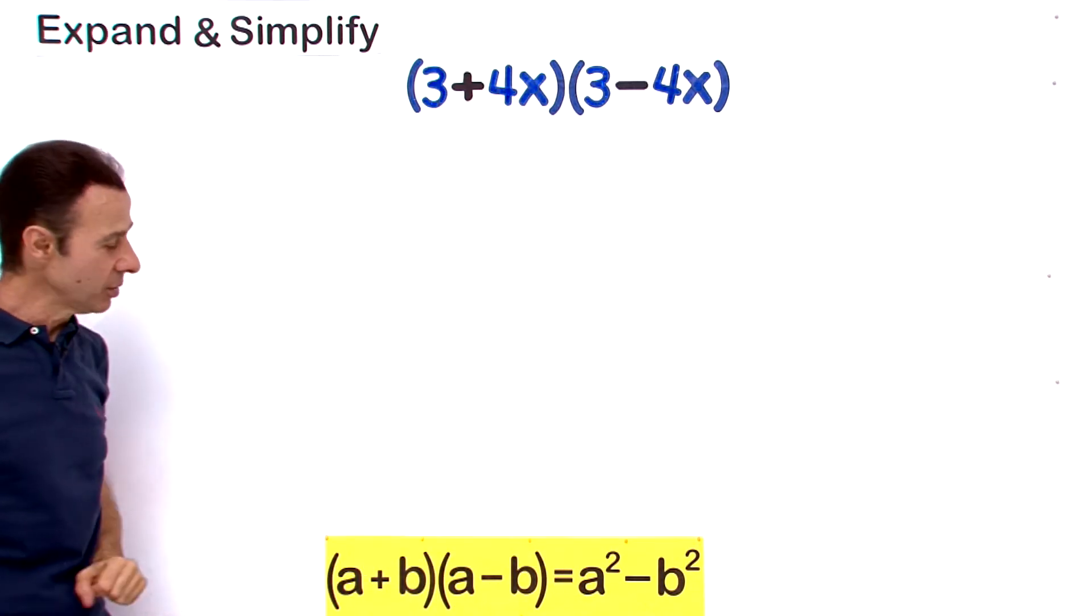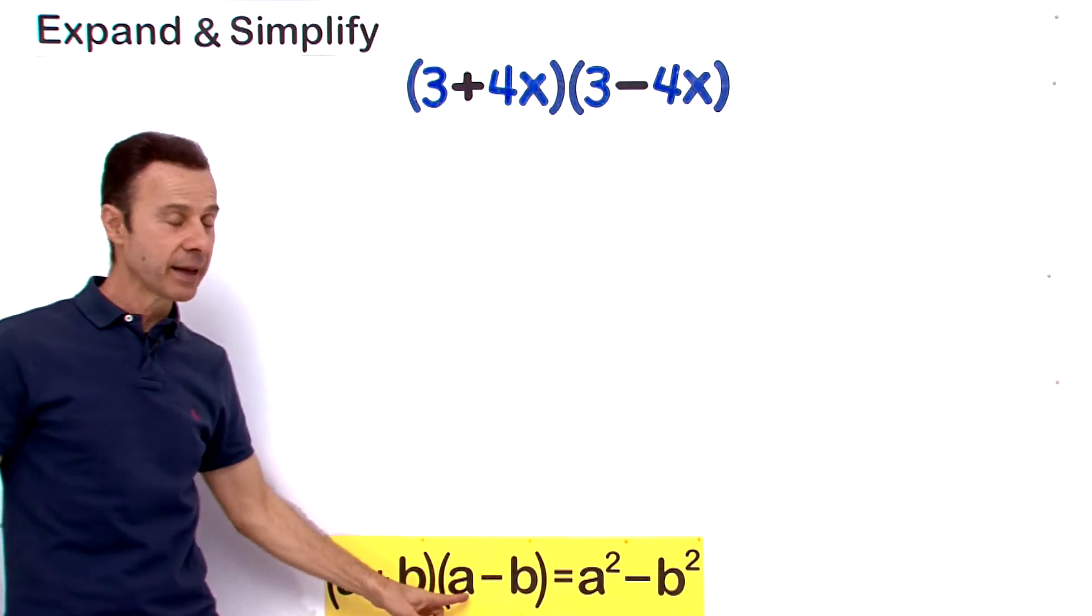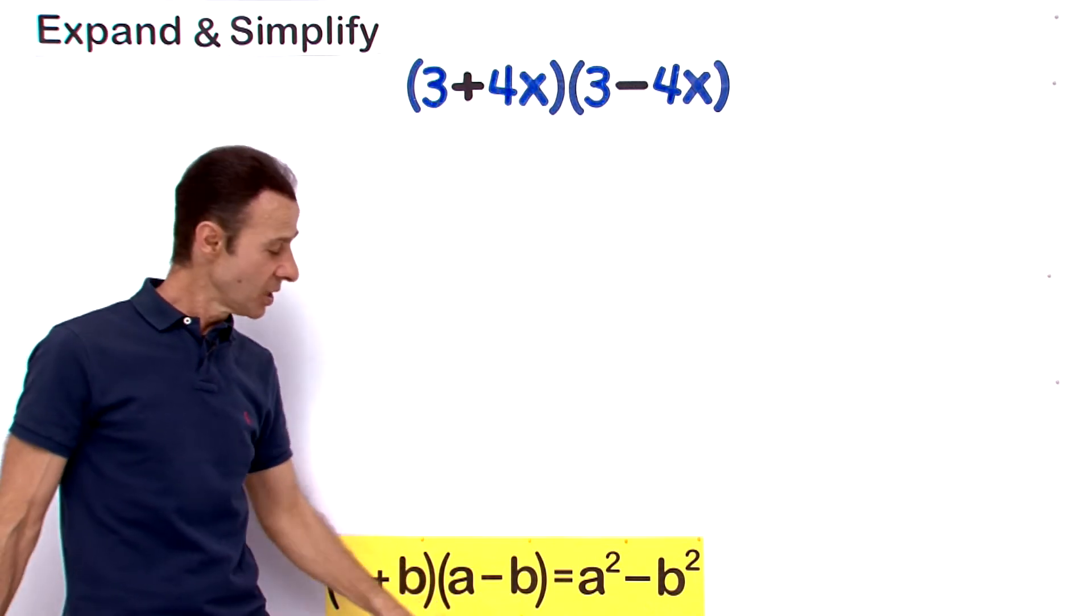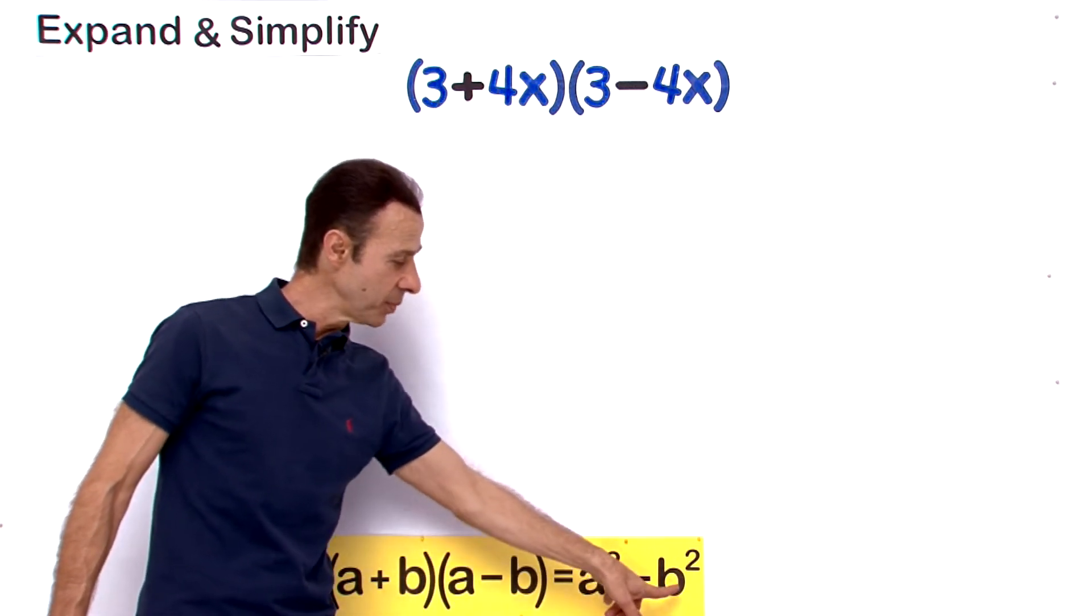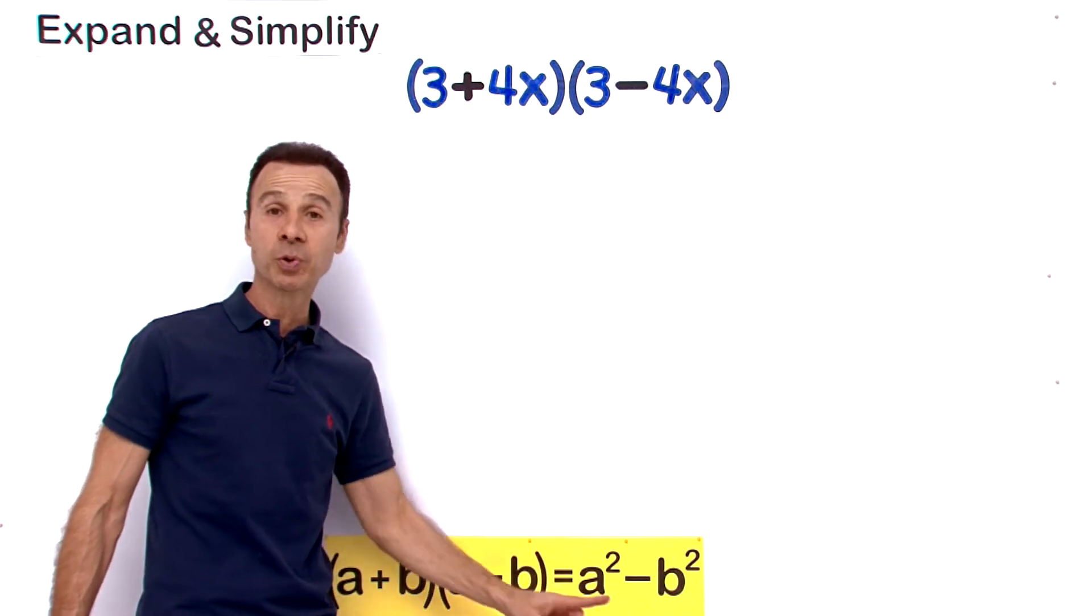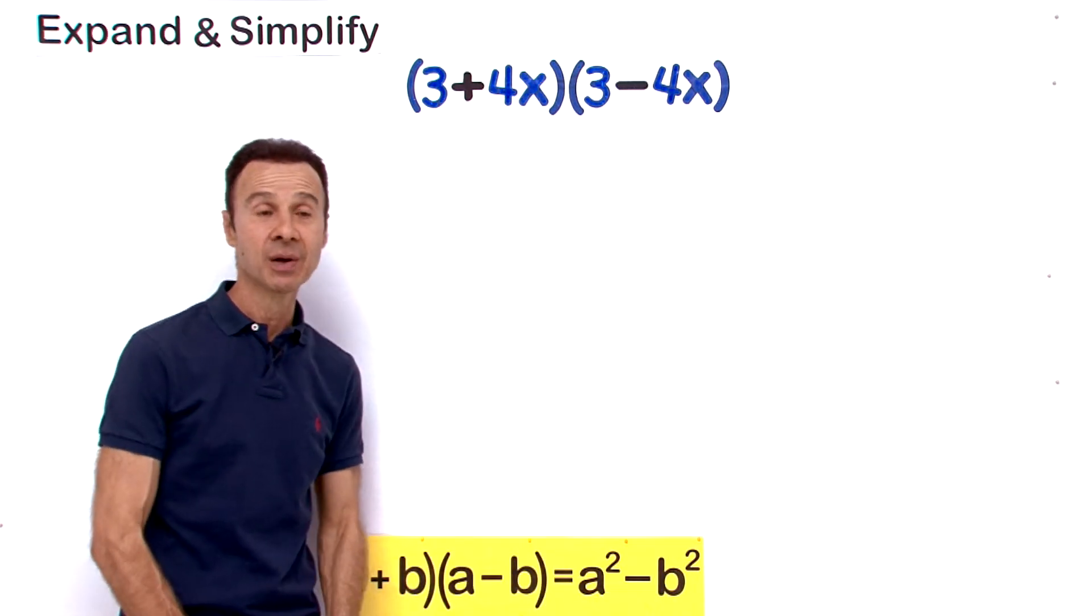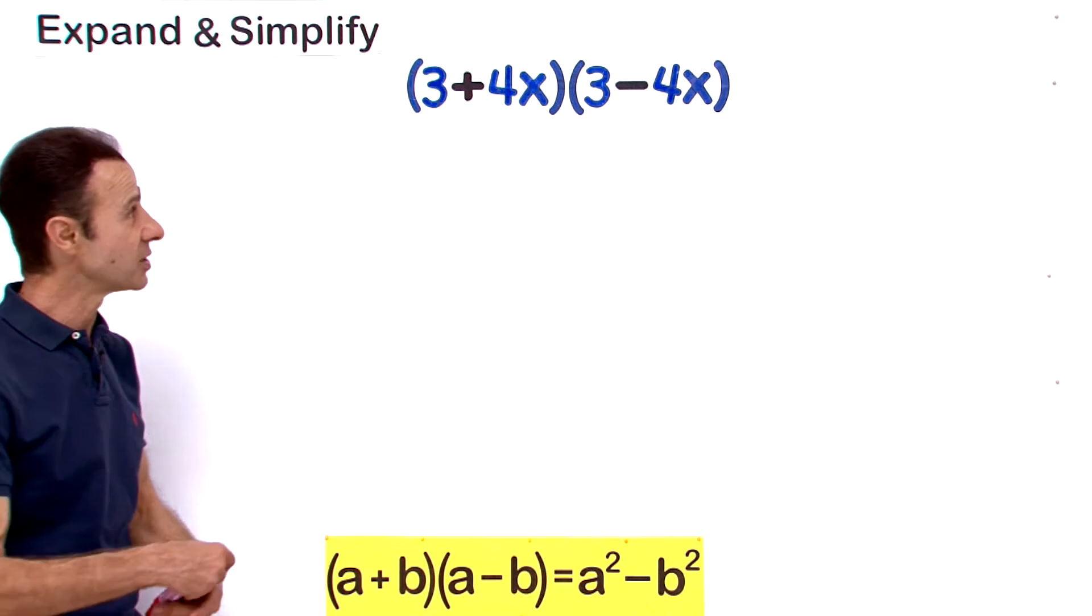We are going to use the formula down here below. We got (a+b)(a-b), and what happens is you just take the two terms a and b and square them while you put a minus in between them. So let's apply it to this particular example.